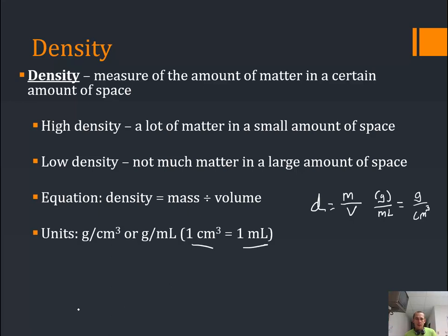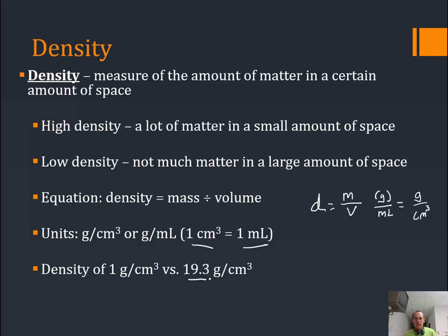One cubic centimeter is the same thing as one milliliter. Water has a density of one gram per cubic centimeter, so if we had one cubic centimeter of it, it'd have a mass of one gram; ten cubic centimeters would have a mass of ten grams. Gold, on the other hand, has a density of 19.3 grams per cubic centimeter. So if I had a one-cubic-centimeter sample of each, the water sample has a mass of one gram, while the same-size chunk of gold would have a mass of 19.3 grams — 19.3 times as much matter crammed in, with particles much closer together.